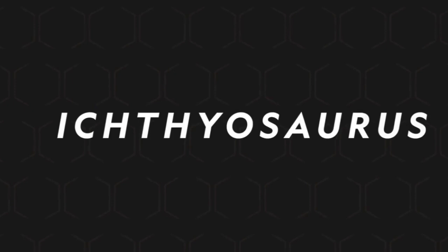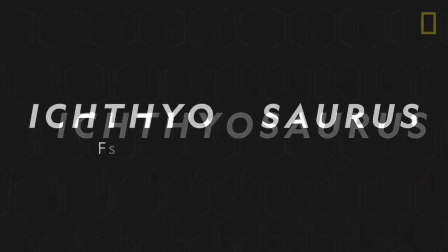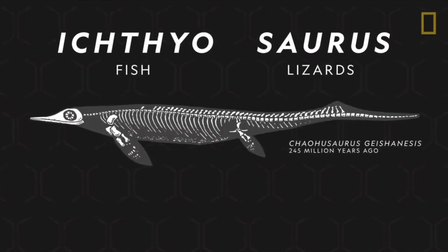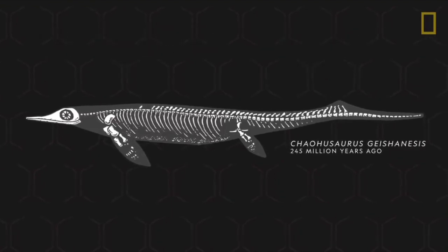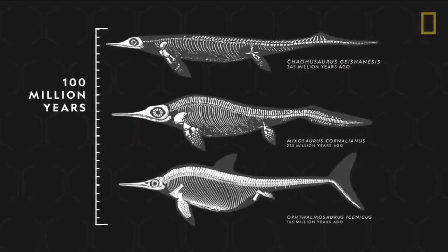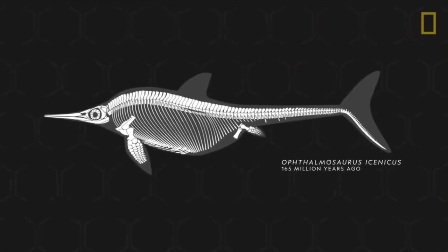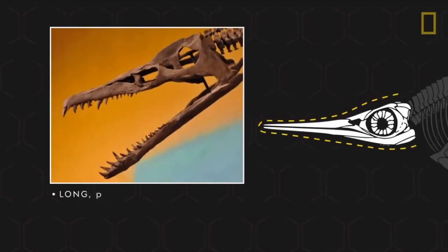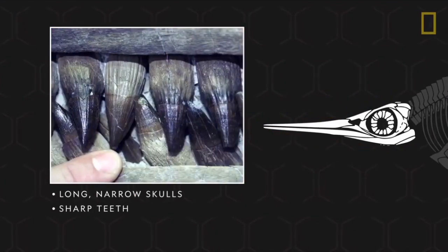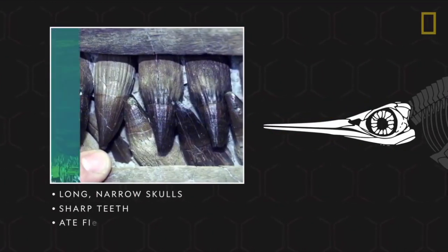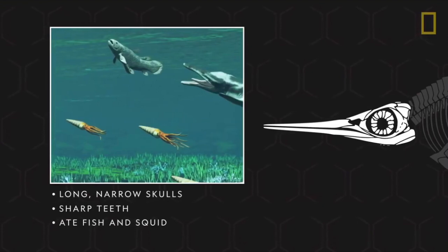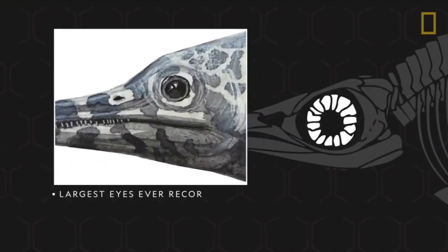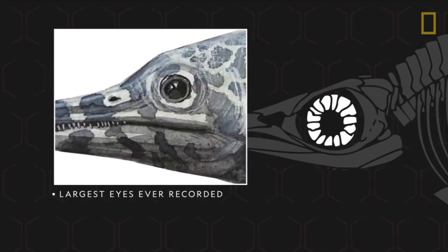The ichthyosaurs, which means fish lizards in Greek, had long narrow skulls and jaws aligned with sharp teeth used to catch prey like fish and squids. The earliest ichthyosaurs looked like lizards with fins, but over their 100 million year existence their bodies transformed and became more akin to fish in shape. Their eyes were the largest ever recorded, helping them see in the dark waters of the deep ocean.